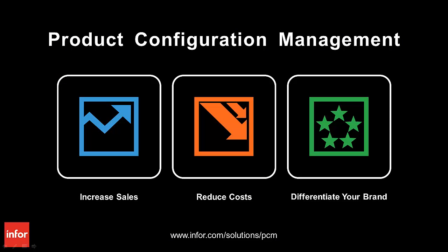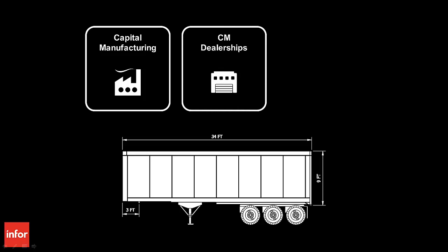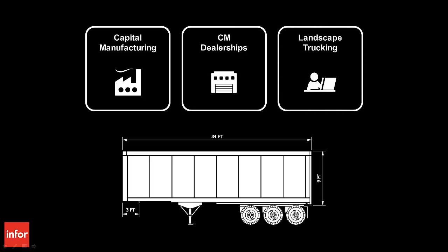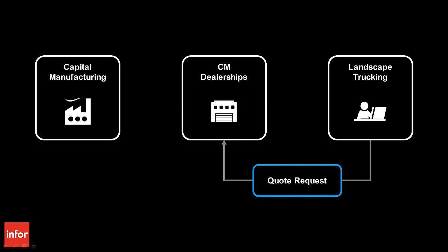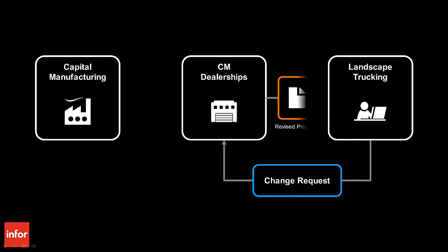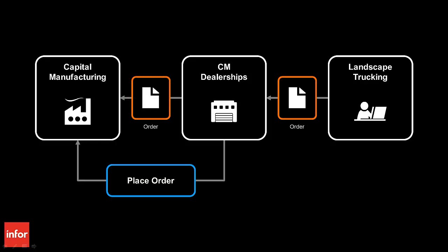We have just seen how Infor Product Configuration Management addresses tough customer challenges with a complete solution, driving real value by increasing sales, reducing cost, and differentiating your brand. In the scenario we just watched, Capital Manufacturing was a manufacturer of semi-truck trailers, CM Dealerships was a dealer for Capital Manufacturing, and Landscape Trucking was a customer for CM Dealerships. We saw how CM Dealerships used Infor Product Configuration Management to respond to a request for quote from Landscape Trucking, how CM Dealerships responded to a change request from Landscape Trucking, and how CM Dealerships converted their quote into an order for Capital Manufacturing.